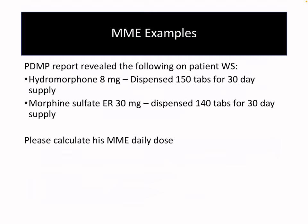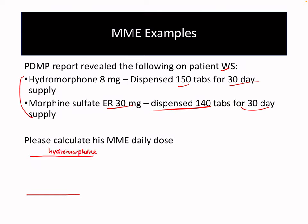Now let's do an example with multiple opioids based on a 30-day supply. This patient, WS, has the following on his PMP: hydromorphone 8 milligrams, 150 tablets for a 30-day supply, and morphine sulfate 30 milligrams, 140 tablets for a 30-day supply. To calculate his morphine milliequivalents, we first figure out the total daily dose for each agent separately. Starting with hydromorphone: 8 milligrams times 150 tablets divided by 30 days.